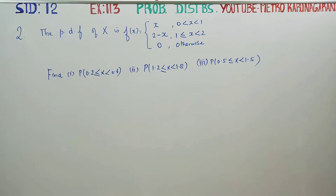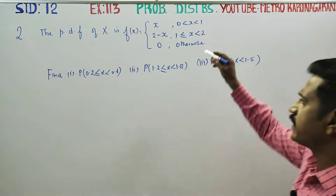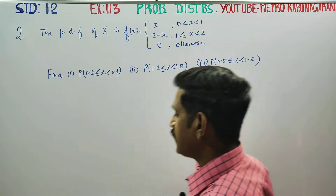Dear 12th standard students, in probability distribution, X is number 11.3, sum number 2. The probability distribution function is given by this.